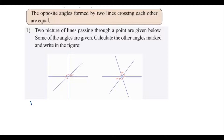For this diagram, this angle is 40 degrees. We can conclude that this angle is also 40 degrees — these two are opposite angles. This is already given as 90 degrees, so this is 90 degrees. The reason is the opposite angle principle.